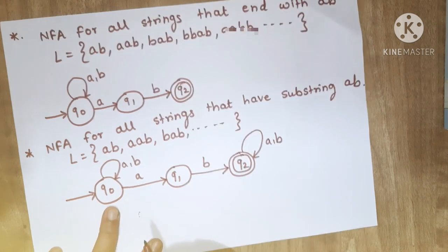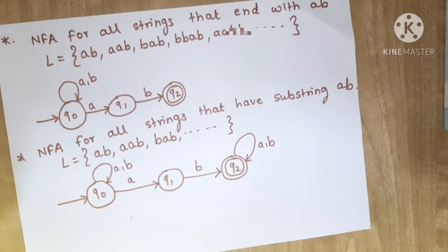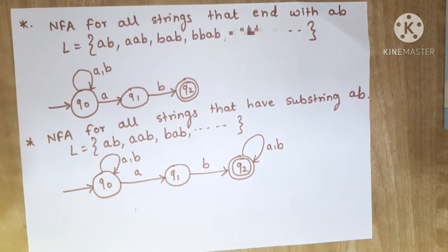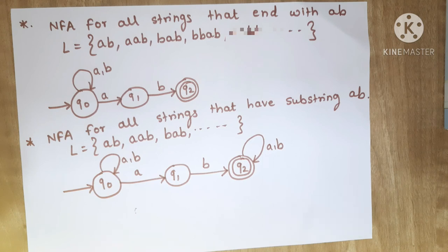In this way you can draw NFA for these two cases: for all strings that end with AB, and for all strings that have AB as a sub-string. Hope you have understood this. If you have any questions or doubts you can write in the comment section. Thank you for watching the video, enjoy learning.